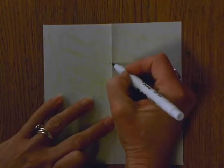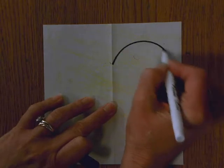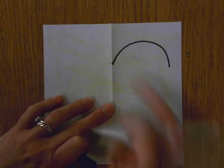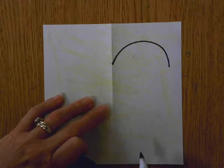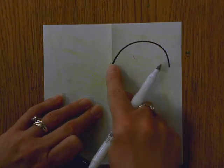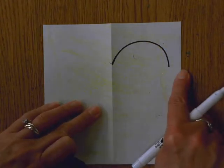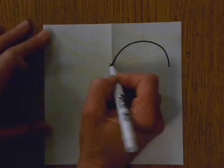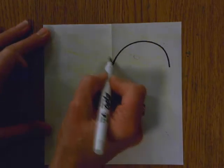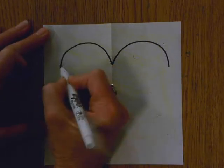So watch as I do this. I'm going to start at the fold and I'm going to make a curving line over. It almost looks like a little small rainbow. Touch the fold, but don't touch the outside of your paper. Now, I'm going to make another curving line going the other direction on the other side.